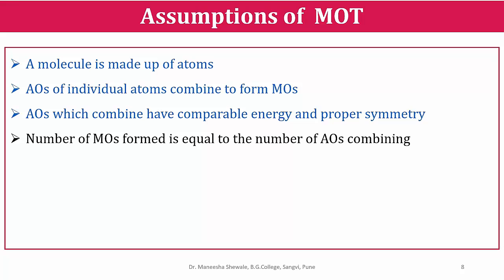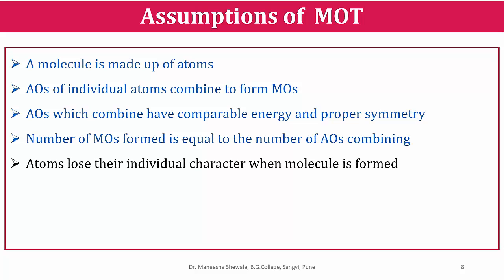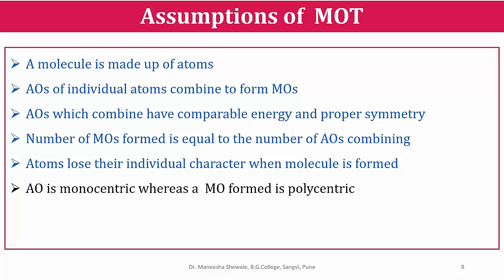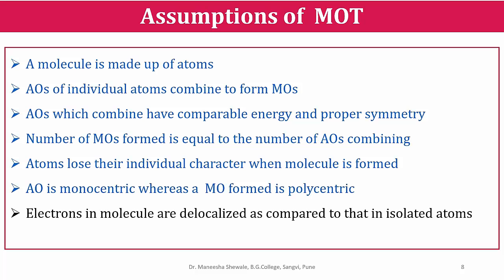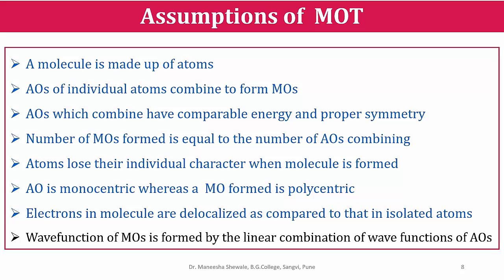The number of molecular orbitals formed is equal to the number of atomic orbitals combined. When the molecule is formed, the atoms lose their individual character. An atomic orbital contains a single nucleus and is said to be monocentric, whereas a molecular orbital contains two or more nuclei and is polycentric. In a molecule, the electrons are more delocalized compared to those in isolated atoms. The atomic orbitals are represented as wave functions, while in molecular orbitals the wave functions are represented as the linear combination of the wave functions of atomic orbitals.